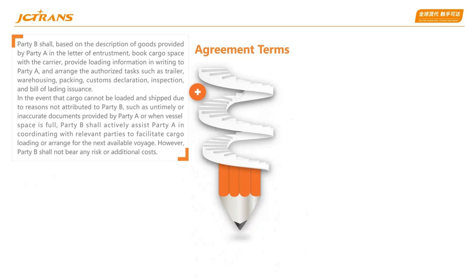The following are the terms of the agreement as extracted through the platform for freight forwarding enterprises. Party B shall, based on the description of goods provided by Party A in the letter of entrustment, book cargo space with the carrier, provide loading information in writing to Party A, and arrange authority tasks such as trailer, warehousing, packing, customs declaration, inspection, and bill of lading insurance. In the event that cargo cannot be loaded and shipped due to reasons not attributed to Party B — such as untimely or inaccurate documents provided by Party A, or when vessel space is full — Party B shall actively assist Party A in coordinating with relevant parties to facilitate cargo loading or arrange for the next available voyage. However, Party B shall not bear any risk or additional costs.